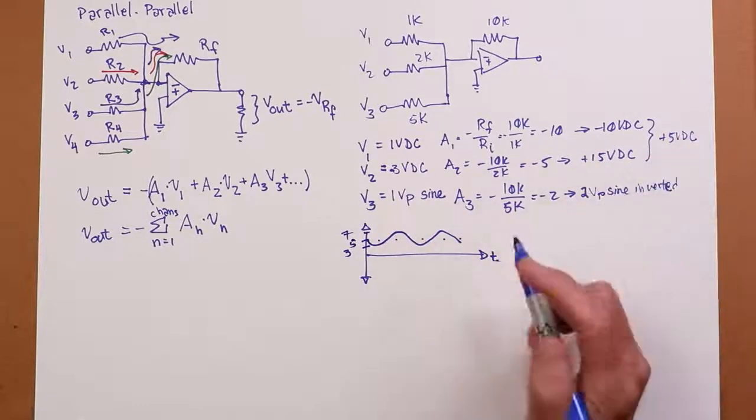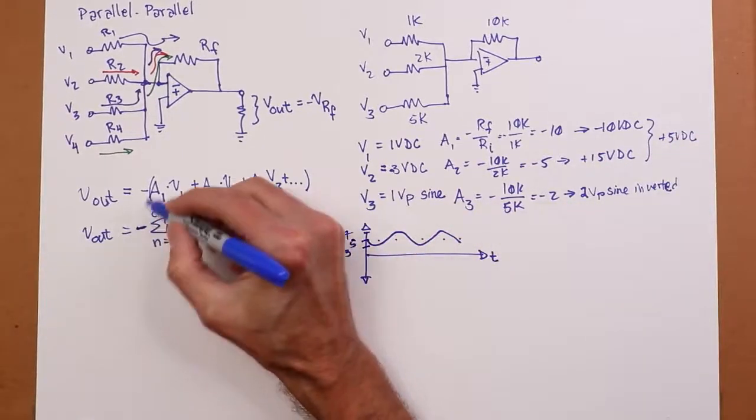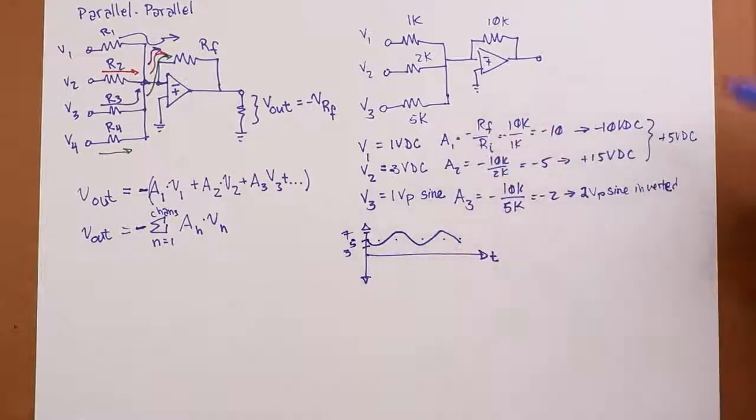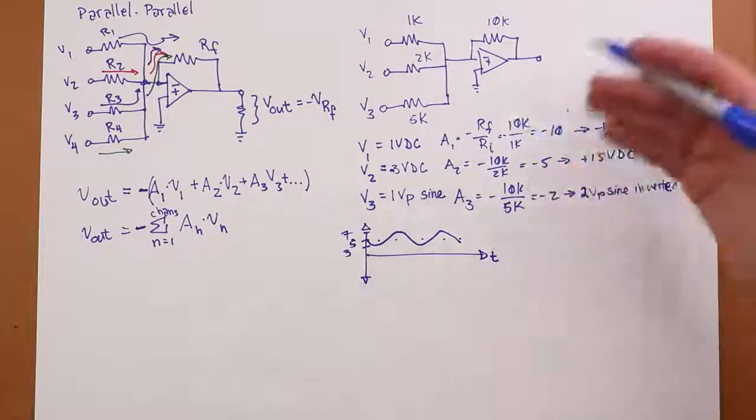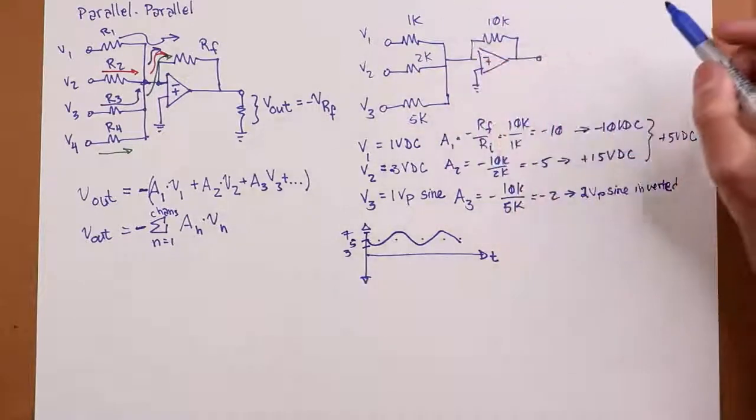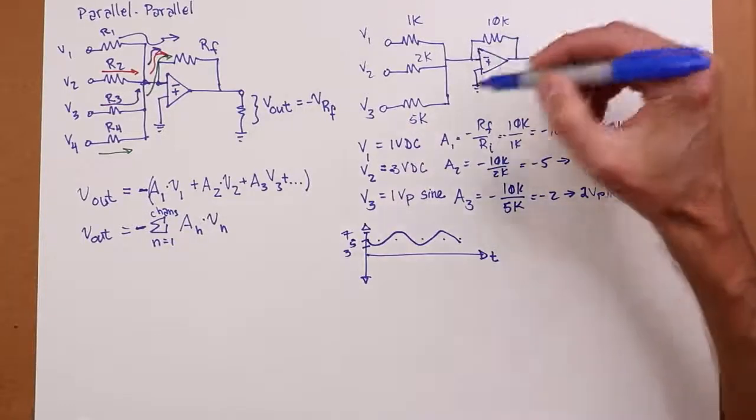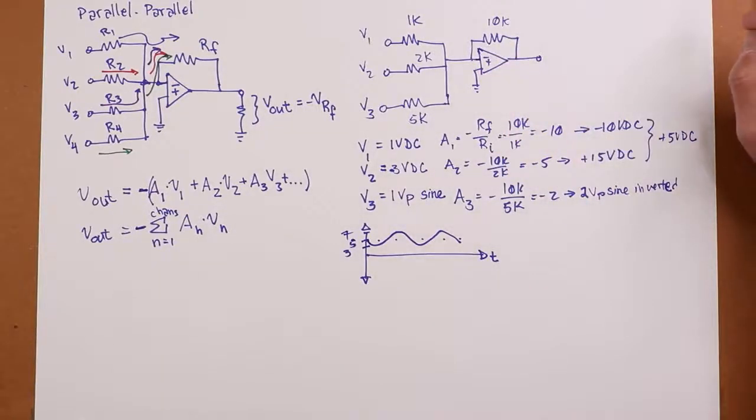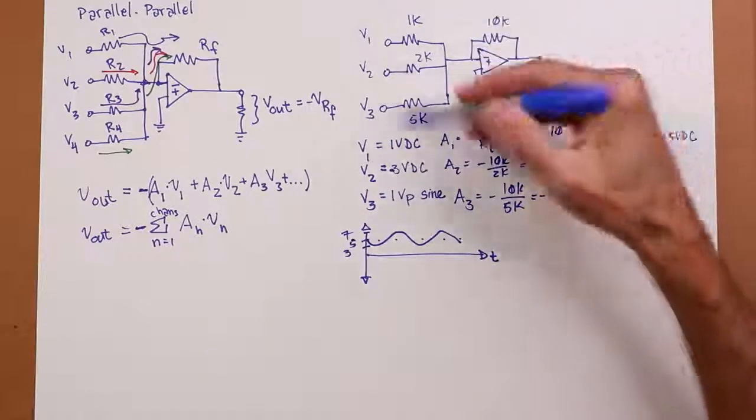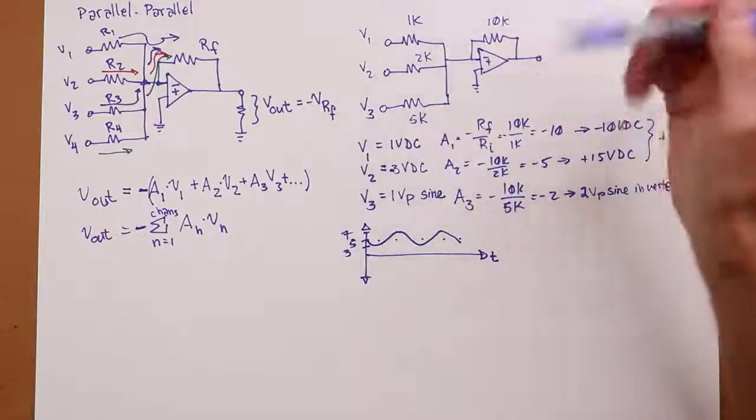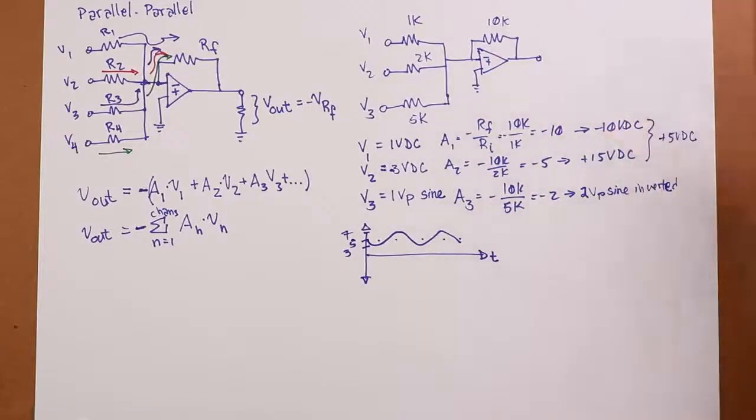So it just adds these up. All right, and inverts, of course. All right, don't forget the minus sign. Inverting summing amplifier. The text does talk about a non-inverting summing amplifier, which has certain advantages. But this is a fairly straightforward configuration, and it's nice because it's based on this parallel-parallel feedback. And it works pretty well. So here we have, like I said, a weighted gain. Each channel has its own gain. And in this case, three signals. And we just see the combination here at the output.